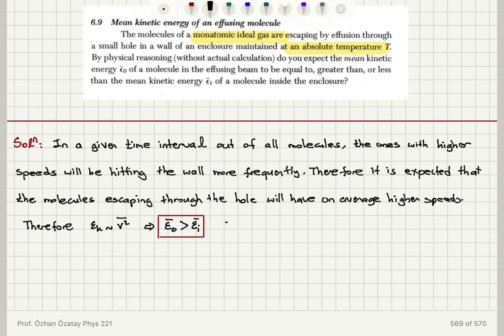So this simple argument basically leads us to the conclusion that the answer will be greater average kinetic energy of a molecule in the effusing beam. We are talking about the mean kinetic energy of an effusing molecule if we have a monatomic ideal gas.